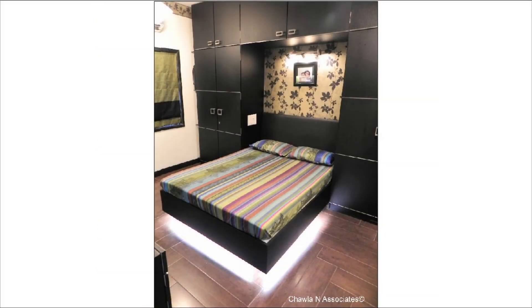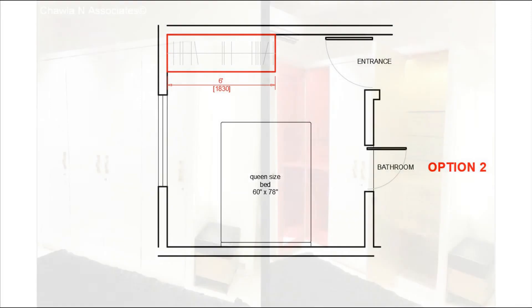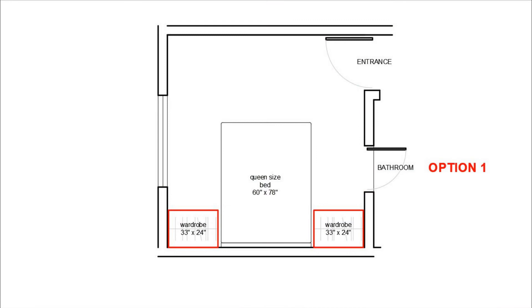The second option for the wardrobe is placing it on the wall opposite the bed, starting from the left corner. Let us start with a six feet length wardrobe, which can look like this from the outside and inside. We will go through both layout options, starting with option number one — wardrobes on either side of the headboard.